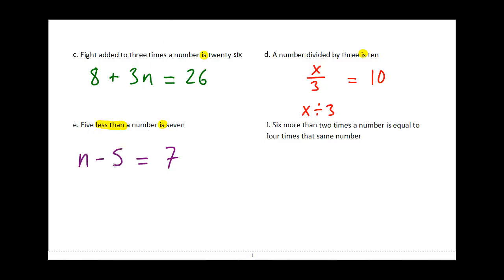And the last one here is a little bit complicated: 6 more than 2 times a number is equal to 4 times that same number. So I've got a pretty busy equation here. Here's my equal sign. Six more than 2 times a number—so 6 plus 2 times a number, use x, 2x—is equal to 4 times that same number. So 4, and you have to be careful here, we're using the same unknown number, so I have to use the same variable, is 4x.